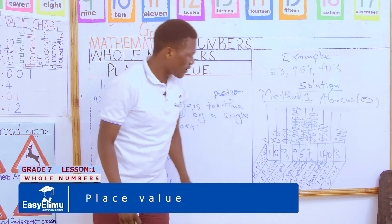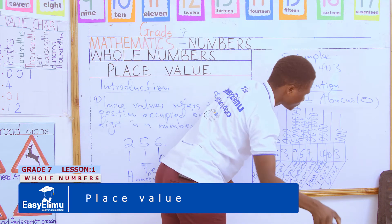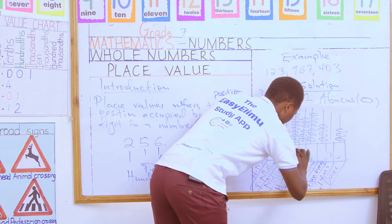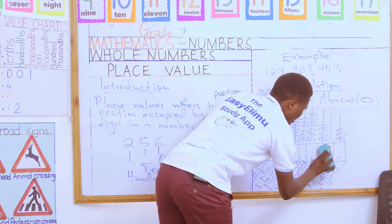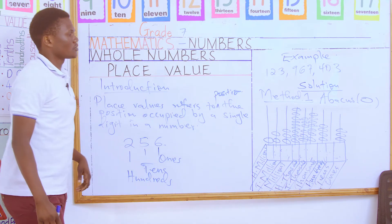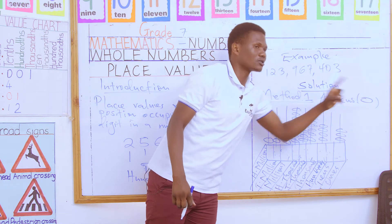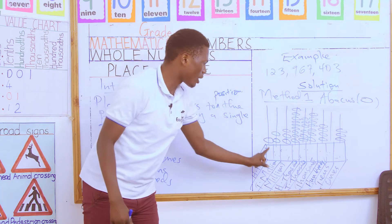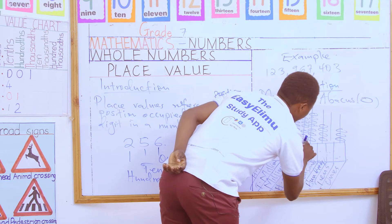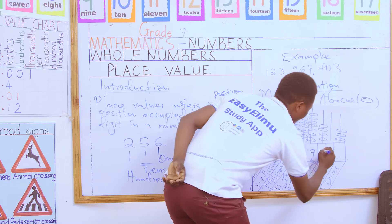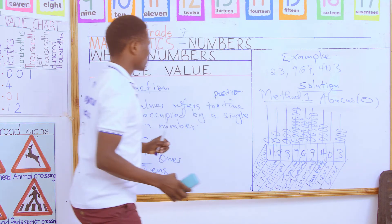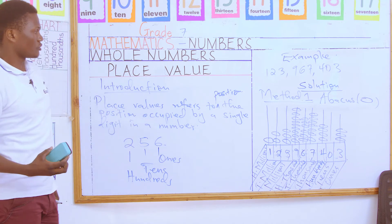In exams, you will often encounter abacus questions where the actual digits are removed. The question will ask you to write the number represented by the abacus and give the respective place values. Remember: a single horizontal oval represents one digit. So one oval means 1, two ovals mean 2, and so on. Reading our abacus: 1, 2, 3, 9, 6 — sorry, 6, 7, 4, 0, 3.